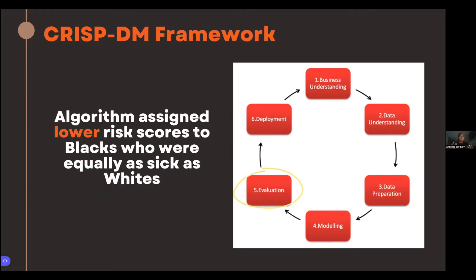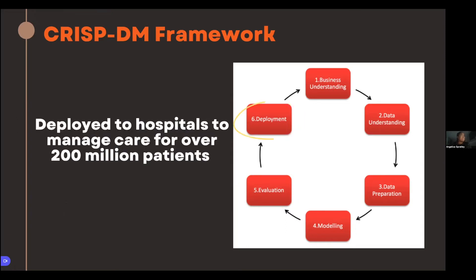In the evaluation phase, the algorithm assigned lower risk scores to Black patients who were equally as sick as white patients. The creators didn't know this before they deployed it. But researchers went back and found it assigned lower risk scores to Black patients than white patients. They ended up deploying it to hundreds of hospitals within the United States that managed care for over 200 million patients. This is a case where an algorithm with racial bias was deployed to millions of patients.